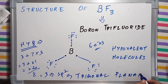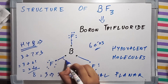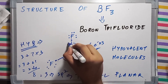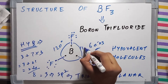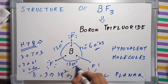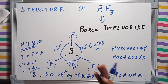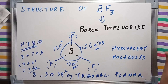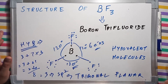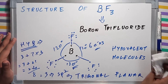sp² hybridization means the structure of BF₃ will be trigonal planar, and the bond angles will be 120 degrees. For trigonal planar geometry, the bond angles are 120 degrees — these are standard values you need to remember. That's it — this was the structure of BF₃. Thank you for watching; I'll see you in the next video.